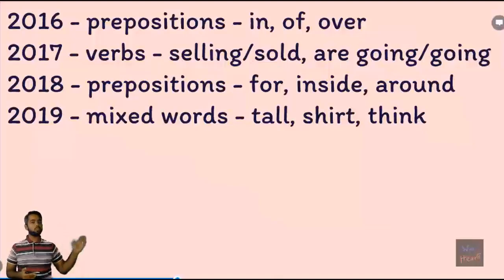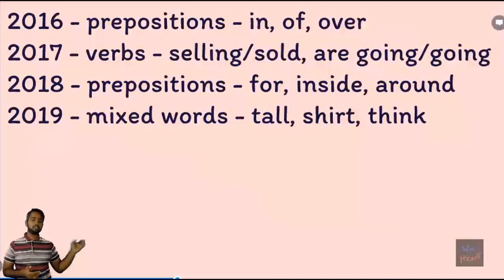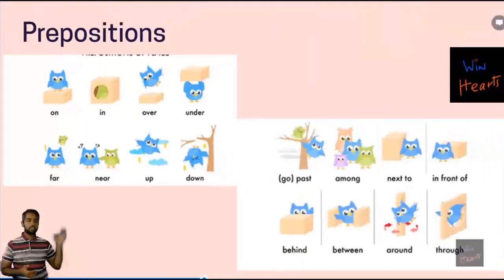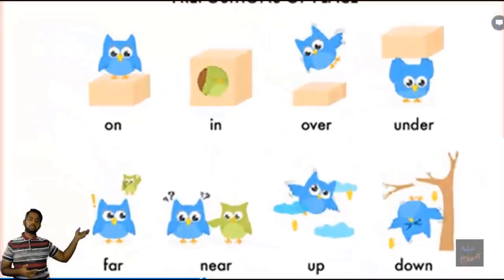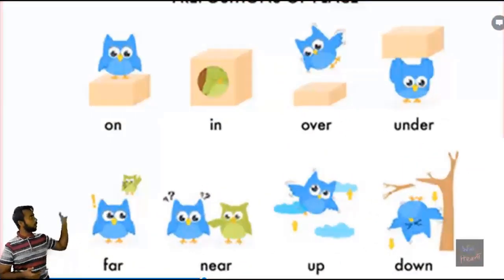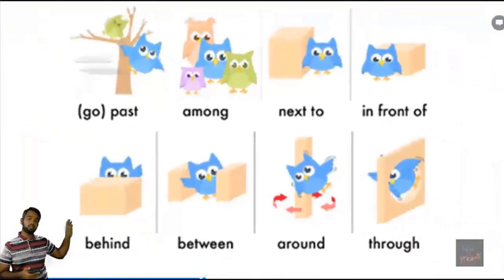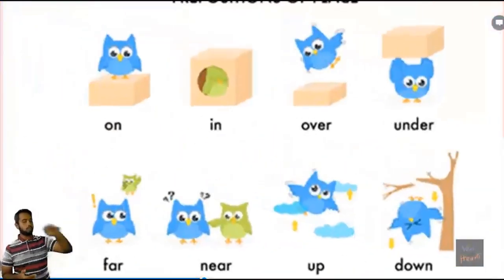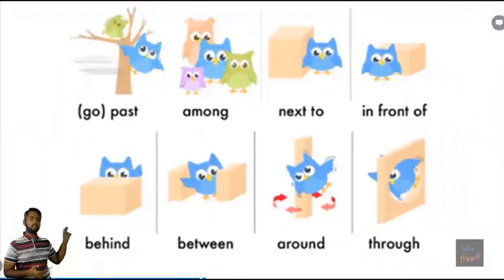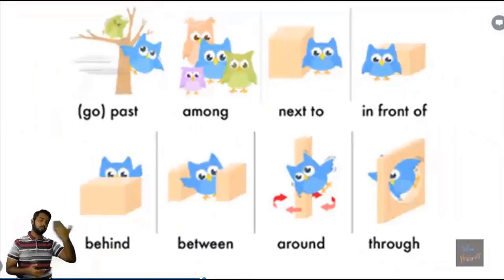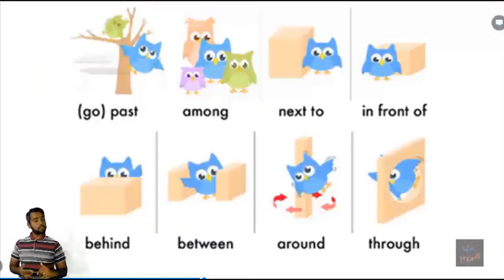I have given you two photos — I got them from the internet — which show some prepositions. It's very classical, and there is an owl, you can see. This owl has a lot of movements. So if it is on something, you say it is on, or under, or over. So these photos are there. You can take a snapshot and record it for your future reference if you want to study further as well.